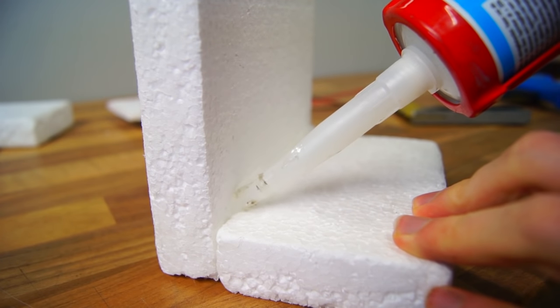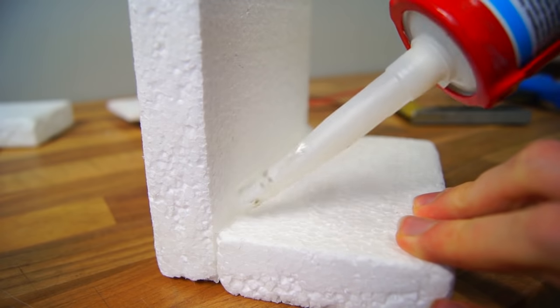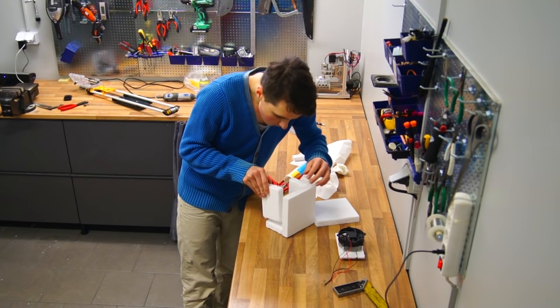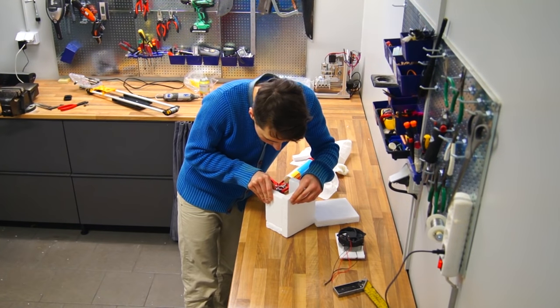Instead of using hot glue the fast cure silicone worked out great. It's white so it blended in very nicely and gave me enough time to align the parts perfectly.